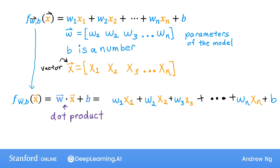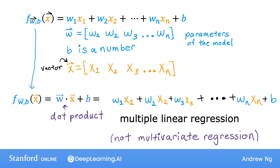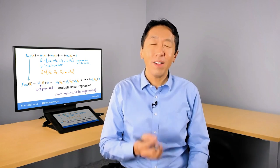The dot product notation lets you write the model in a more compact form with fewer characters. The name for this type of linear regression model with multiple input features is multiple linear regression. This is in contrast to univariate regression, which had just one feature. By the way, you might think this is called multivariate regression, but that term actually refers to something else. In order to implement this, there's a really neat trick called vectorization, which will make it much simpler to implement this and many other learning algorithms. Let's go on to the next video to see what is vectorization.